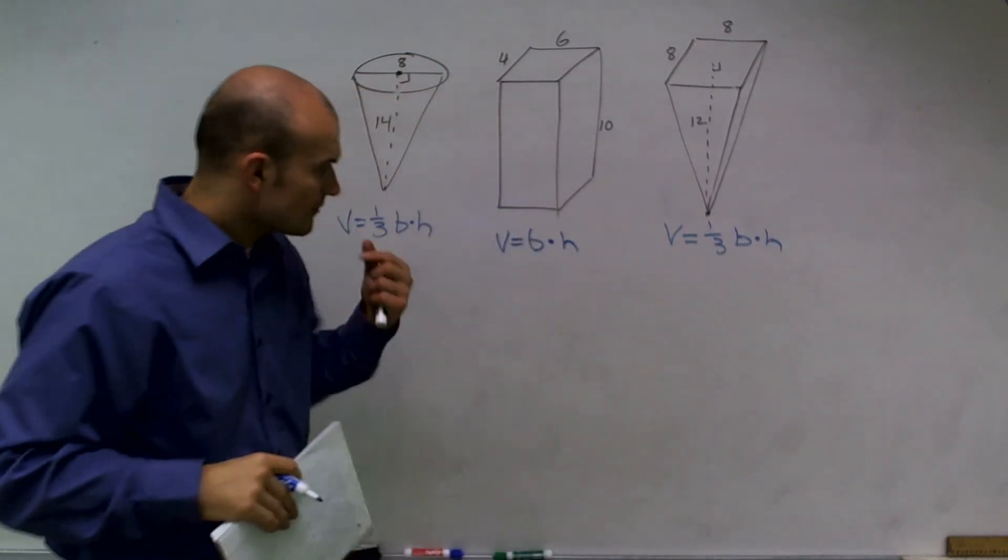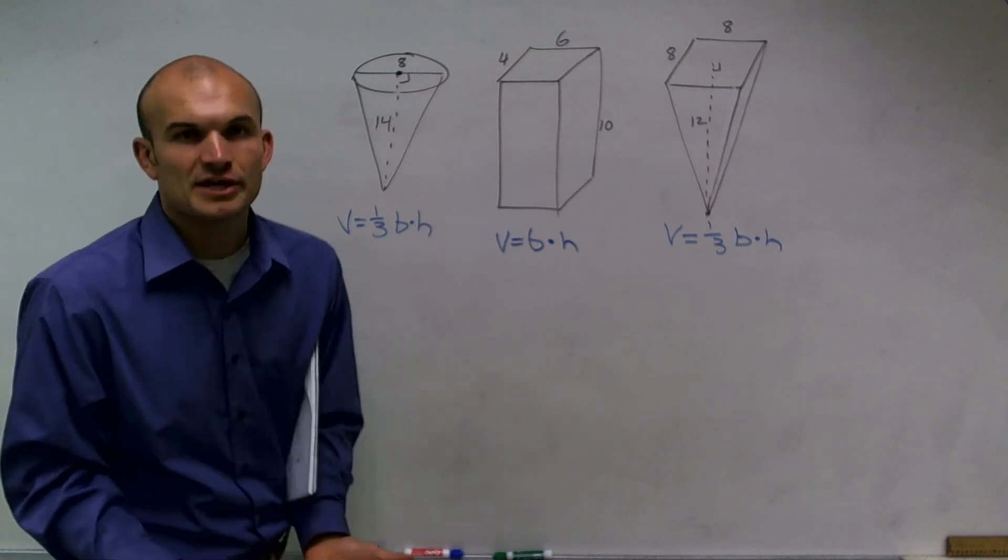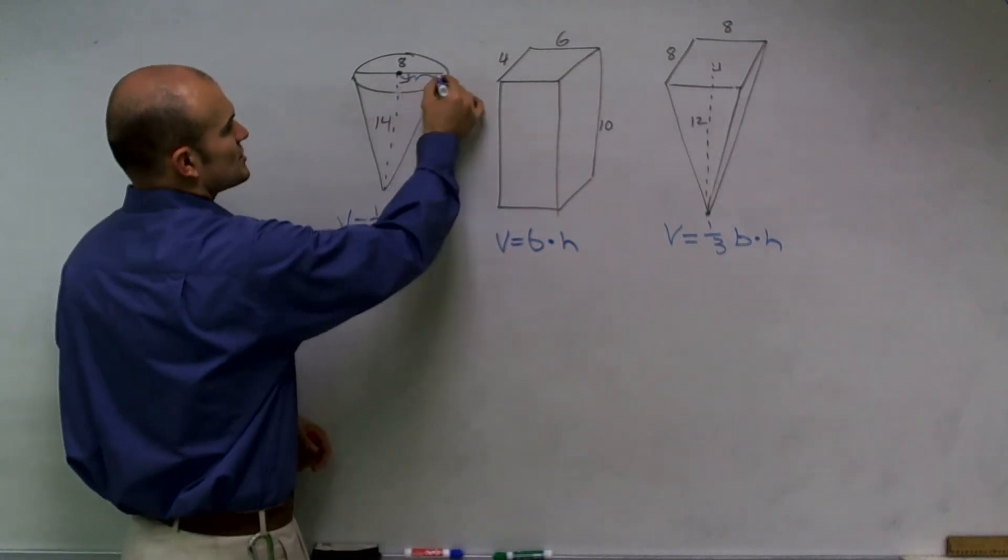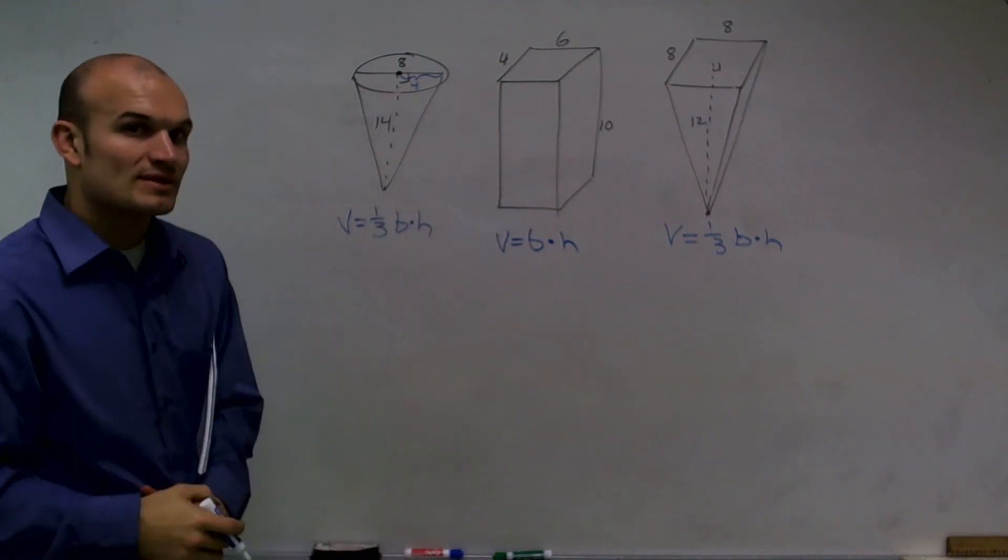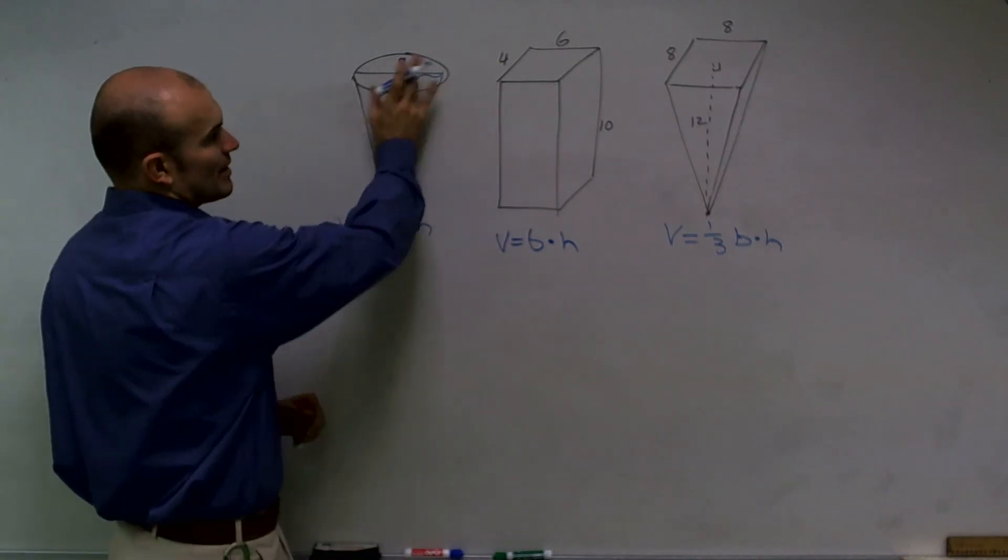So, the first thing we want to do is just find the area of the base. Well, here, if we notice it's a circle, so therefore the radius is going to be four. Since my diameter is eight, my radius is four.